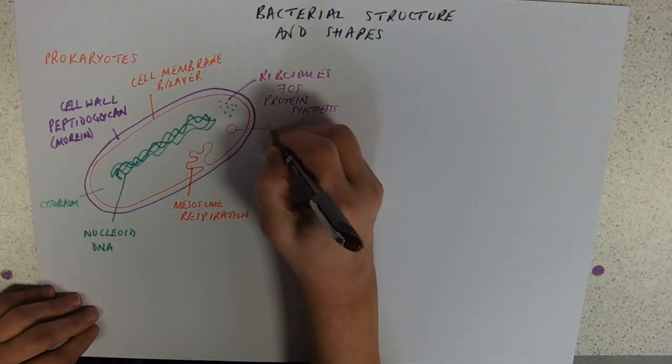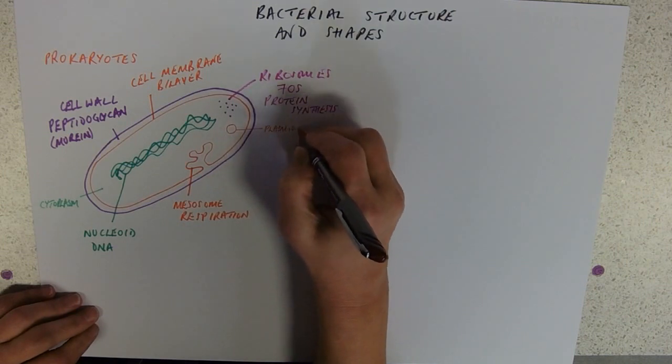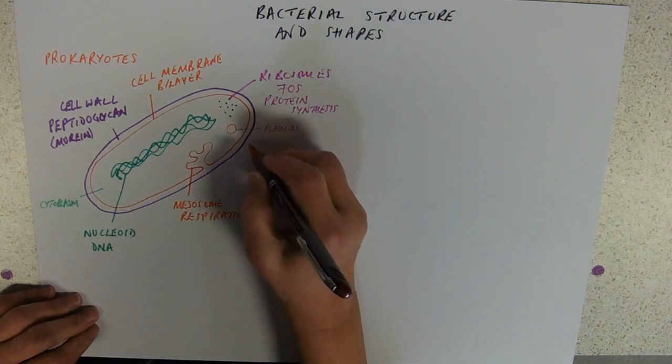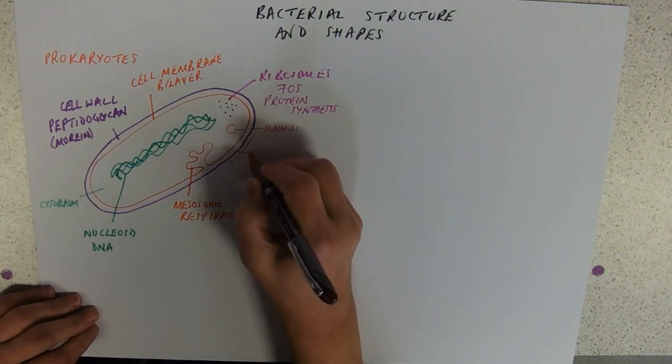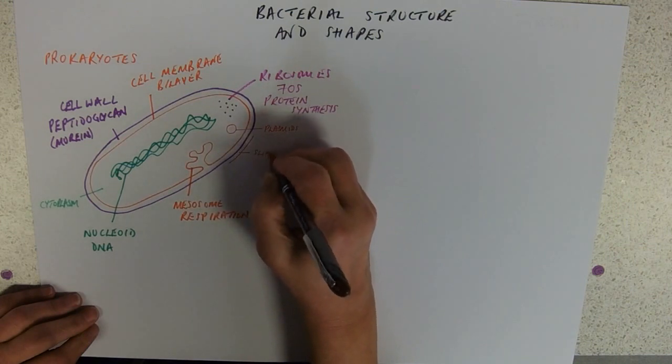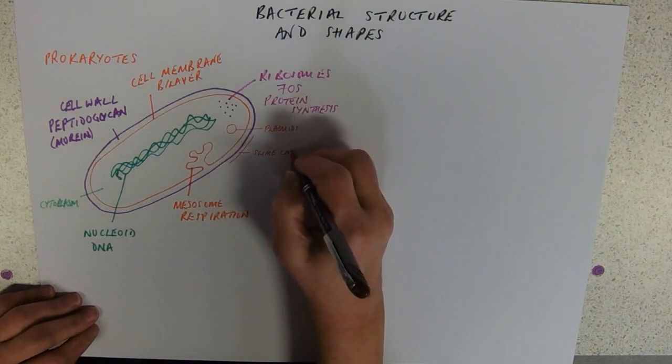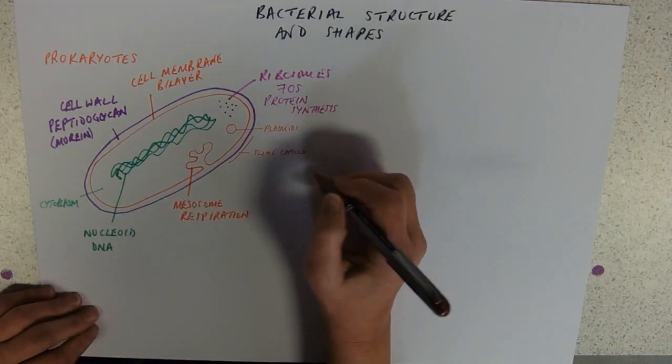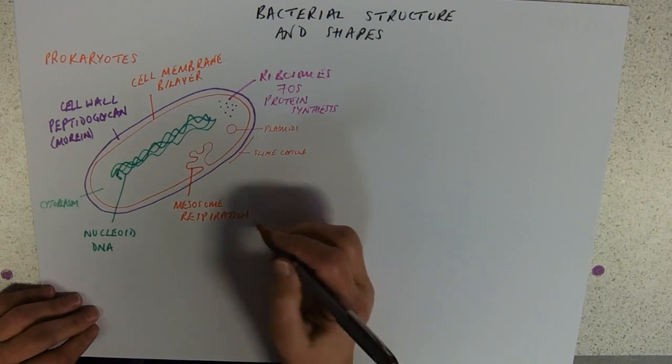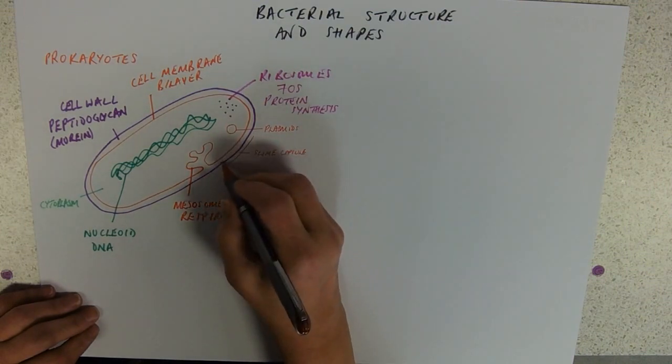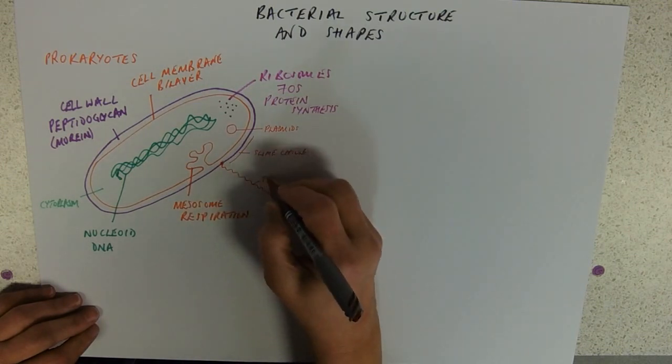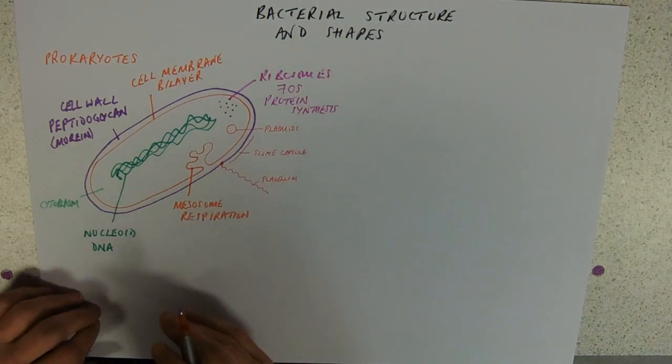We've got plasmids, those extra circles, small circles of DNA with additional genes on. Some of them may have an extra layer around the outside called the slime capsule. Which has a kind of a protective function against desiccation and against the immune systems. They may have a flagellum.